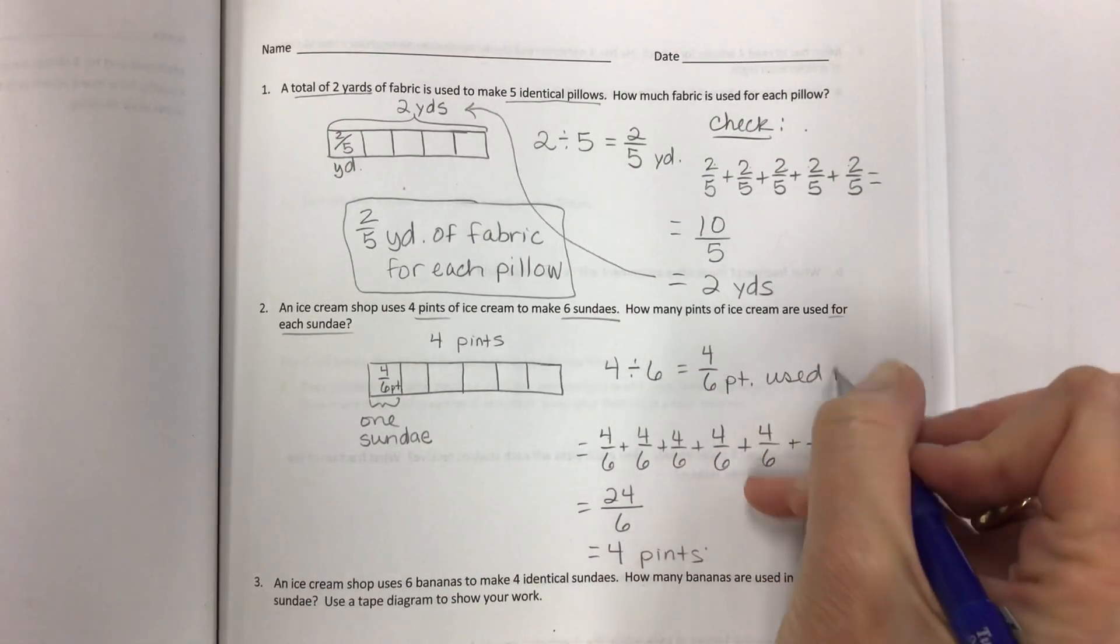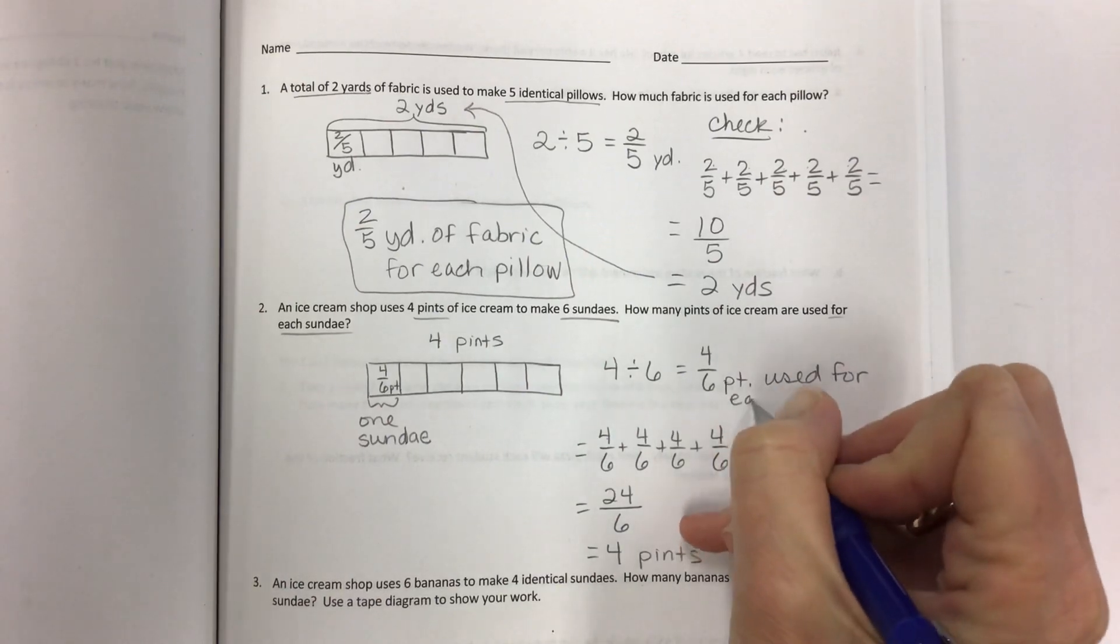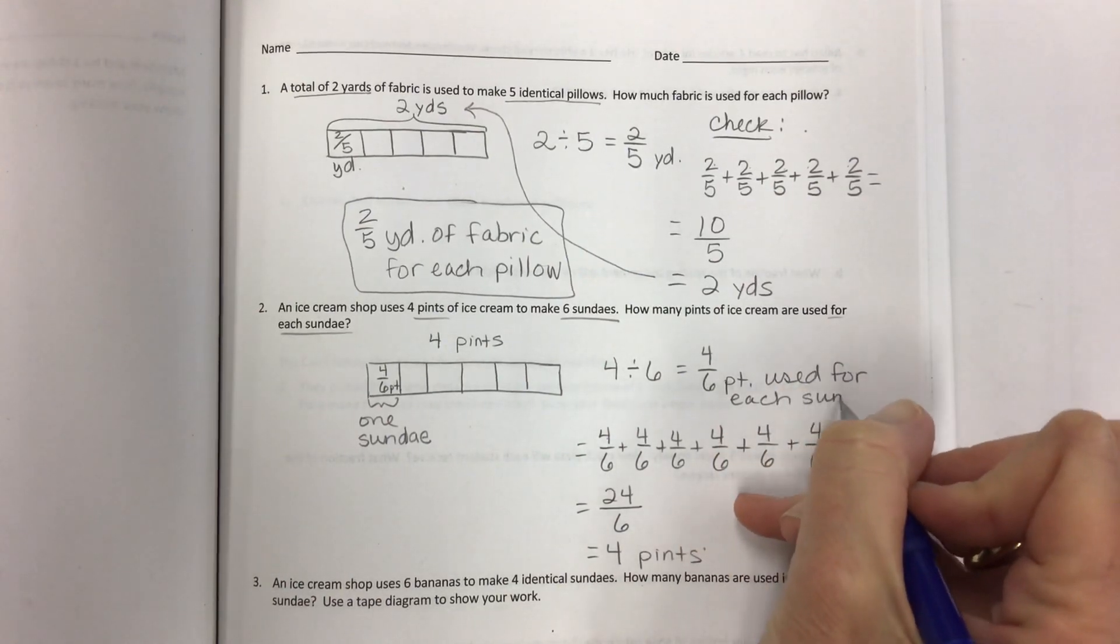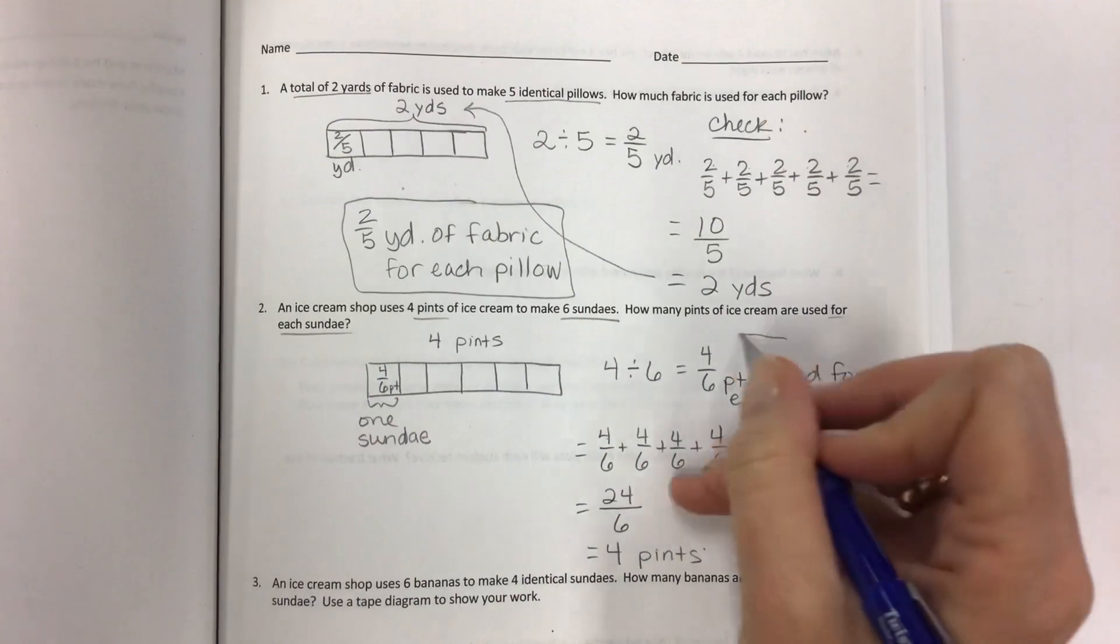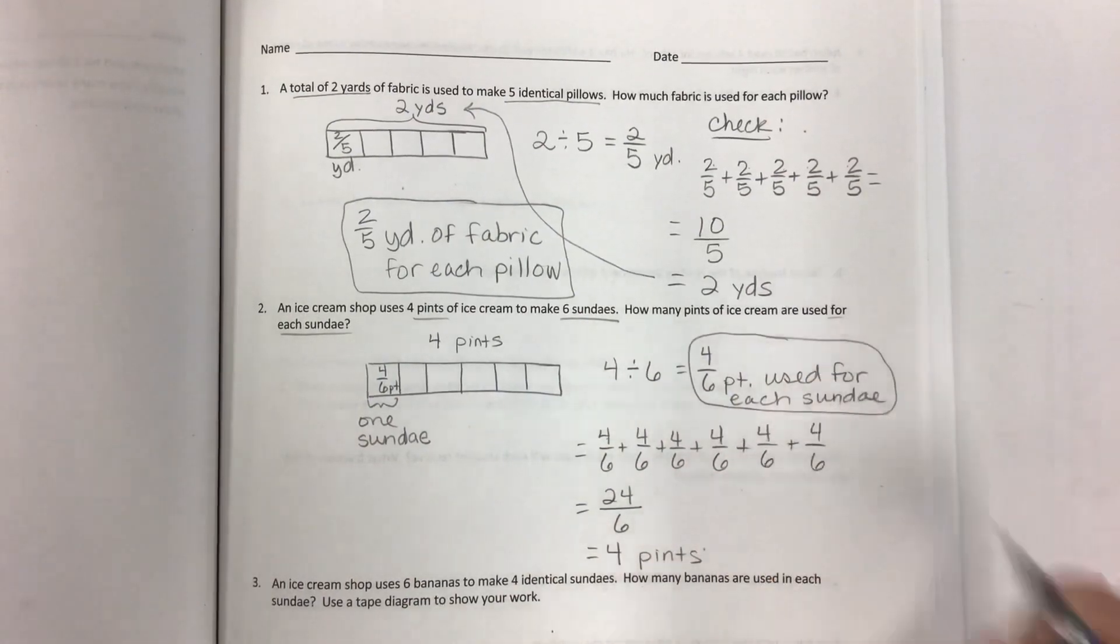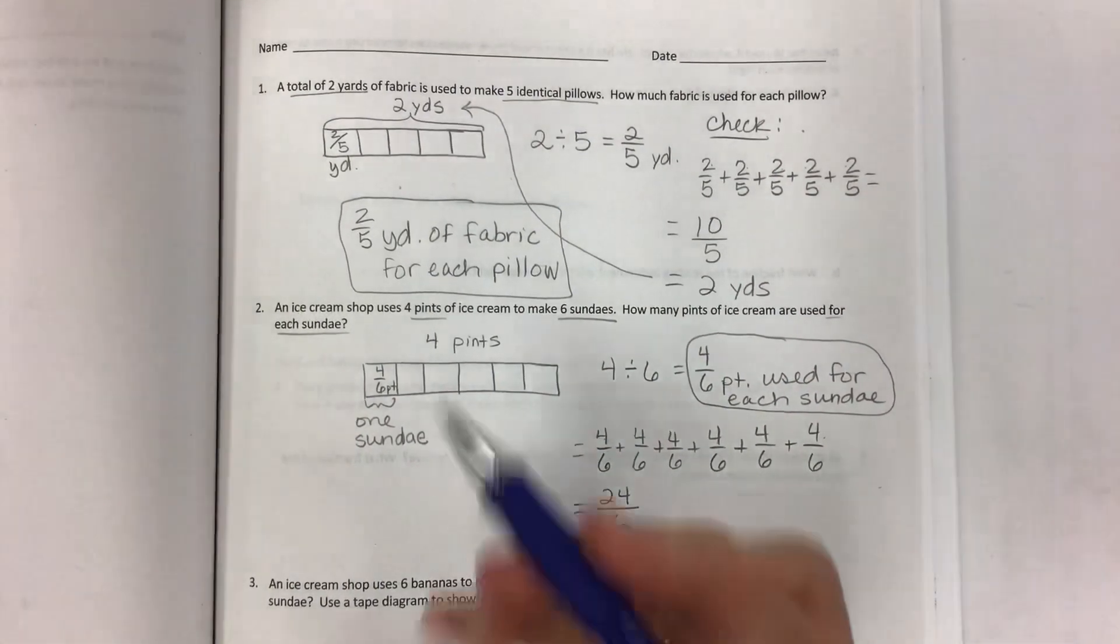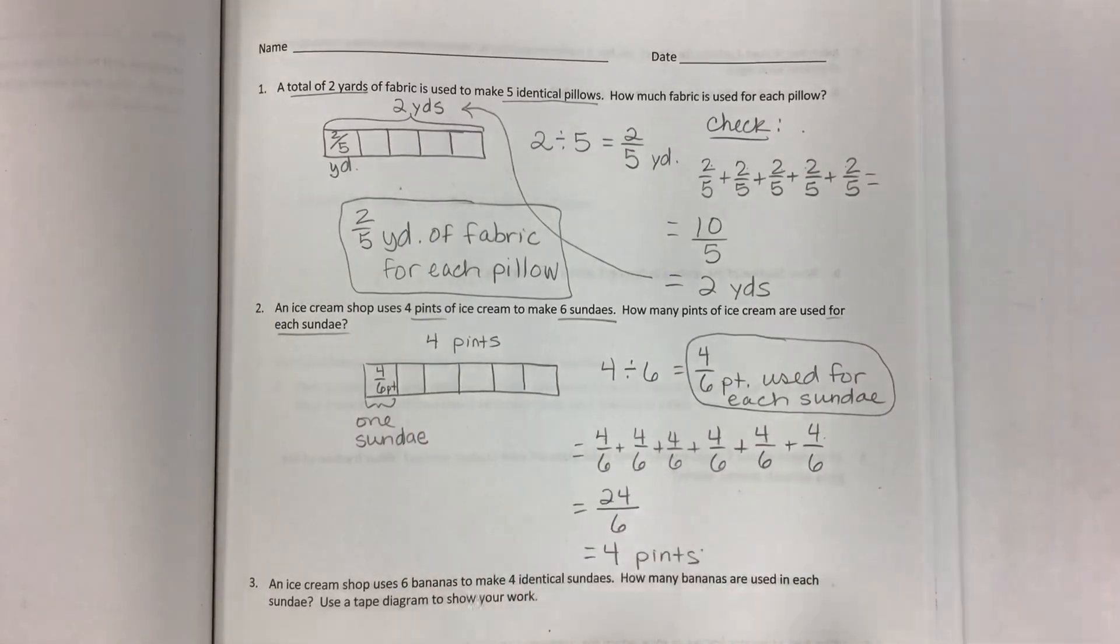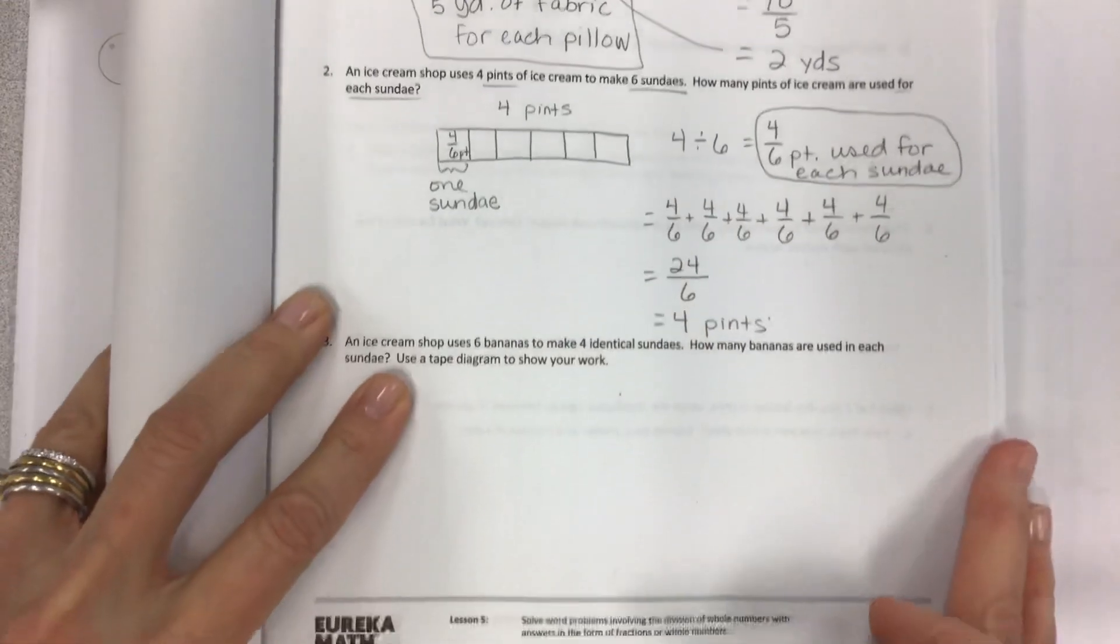Used for each sundae. There you go. You can label each one if you want to, but I'm not going to make you do that today. We're already doing enough over here with the check.